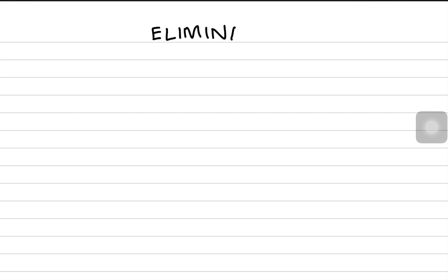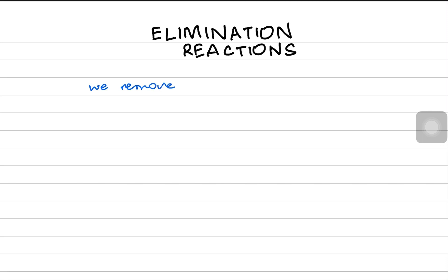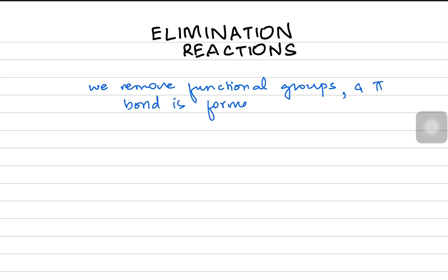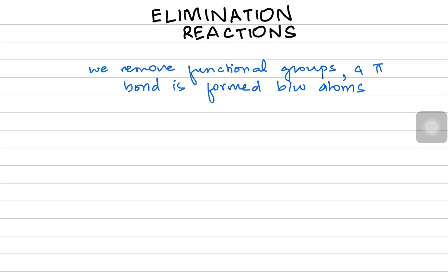Hey everyone, welcome back to another video. Today we're starting a new concept that we have been procrastinating for a while: elimination reactions. The word itself hints that in an elimination reaction we remove functional groups, and when these functional groups are gone, the carbon's valency is unsatisfied, so a pi bond is formed between atoms — they could be carbon-carbon or carbon-oxygen.